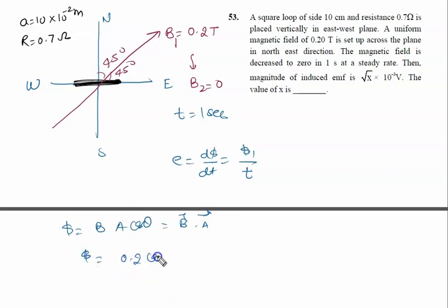What is B? B is written as 0.2cos(45°)î + 0.2sin(45°)ĵ. What is the area vector? If it's placed in the east-west plane, it's the x-z plane, then definitely in the y direction.